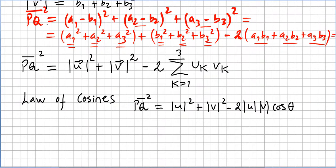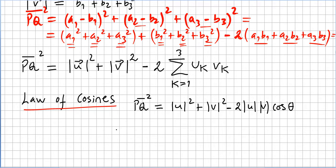Let me quickly remind you of the famous law of cosines from high school. We have: PQ^2 equals |u|^2 plus |v|^2 minus 2 times |u| times |v| times cosine of theta.